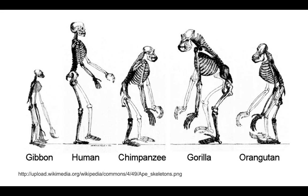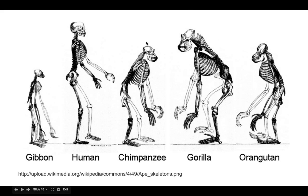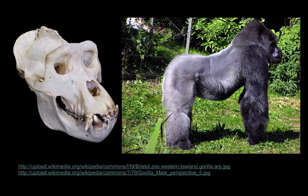We can see natural selection in other places as well. We know that gibbons, humans, chimps, squirrels, and orangutans have a very distant shared ancestor, and we can see similarities. However, each of these species is adapted differently for survival.